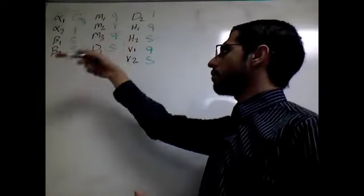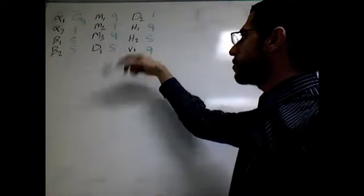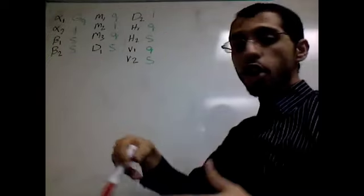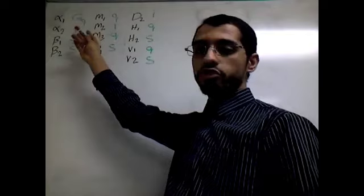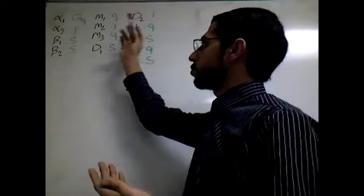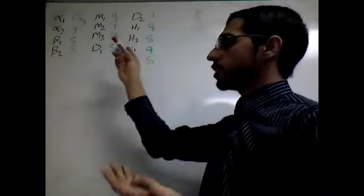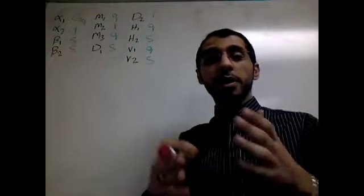we have a lot of receptors: alpha 1, alpha 2, M2, M3, H2, V1. All these receptors, some of them are associated with GQ, some of them associated with GI, some of them associated with GS. How will I remember all of that on exam day?